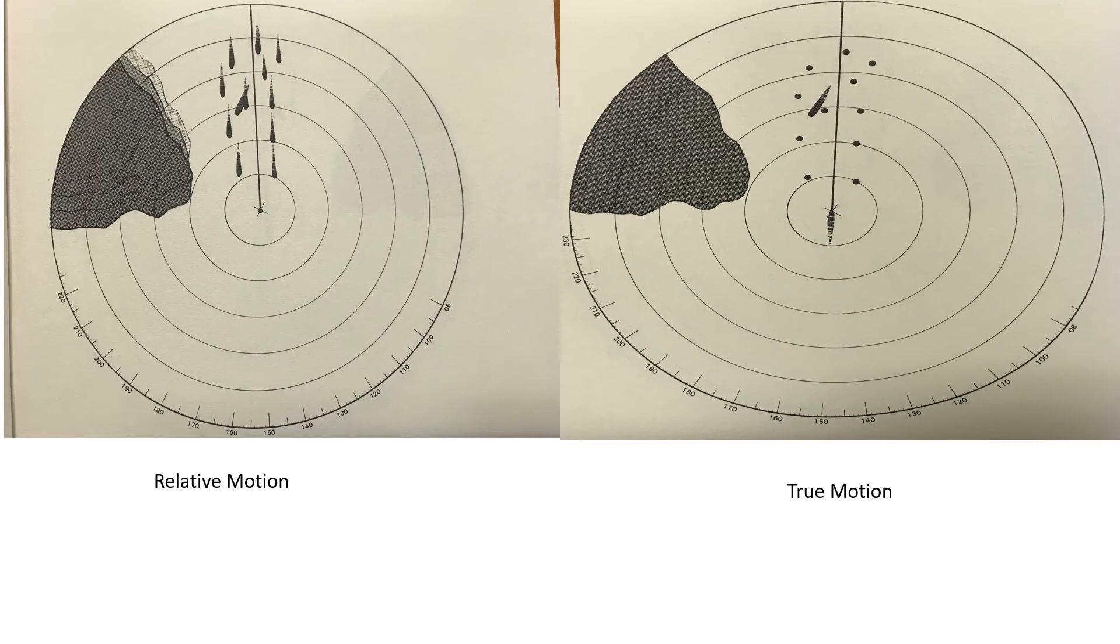Now what you see on the true motion picture on your right is quite different. You can see that the land masses and buoys are stationary while the traffic approaching your vessel is quite obvious. You can quickly see that all the targets are actually buoys. In general, the display is cleaner, easily understandable, and not as confusing as the relative motion picture on the left side.